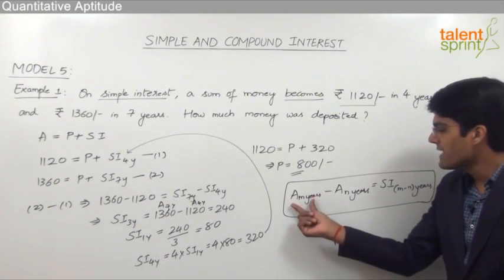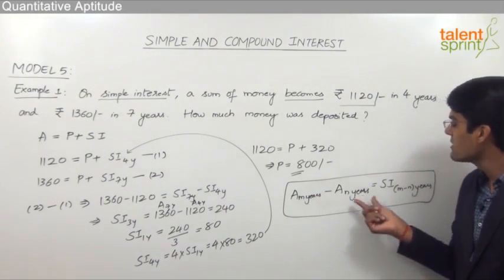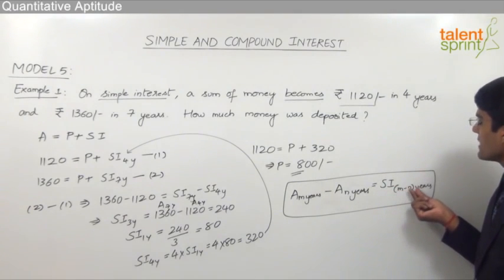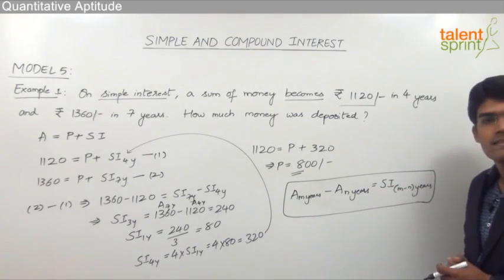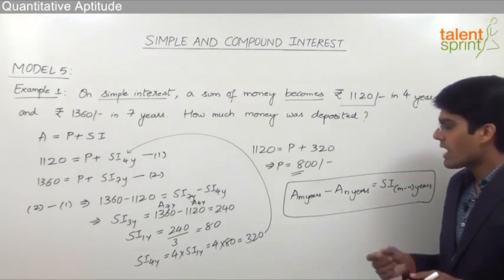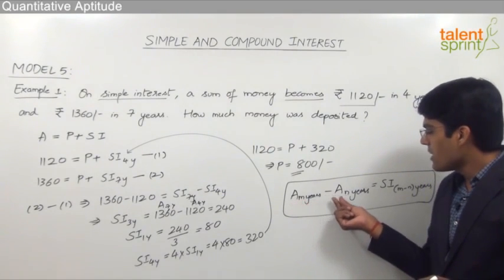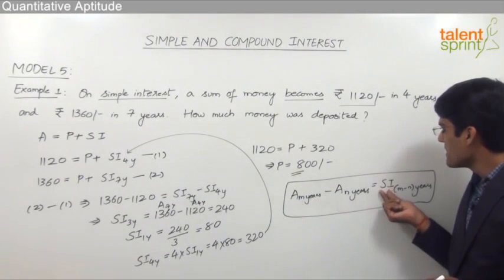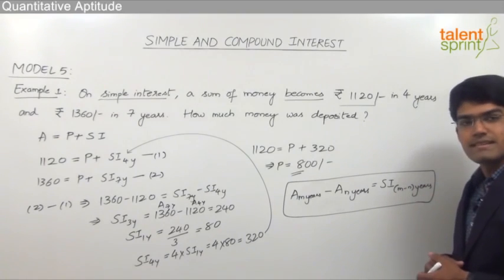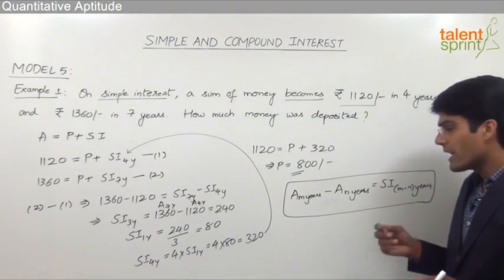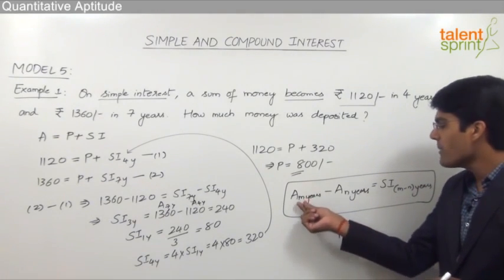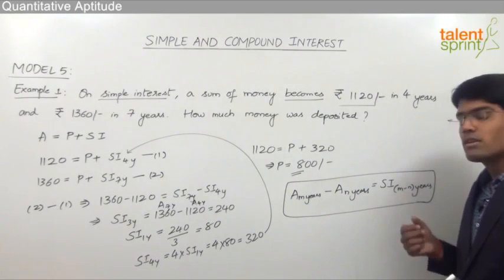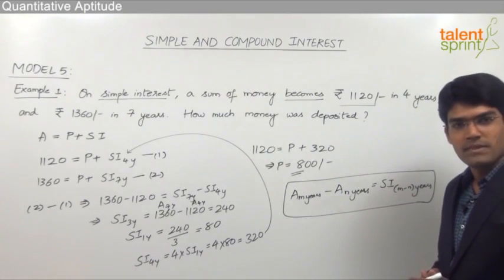For example, amount of 10 years minus amount of 4 years gives simple interest for 6 years, or amount of 8 years minus amount of 2 years gives simple interest for 6 years. Whatever m or n is given, you can just subtract and find out the simple interest for those many years.